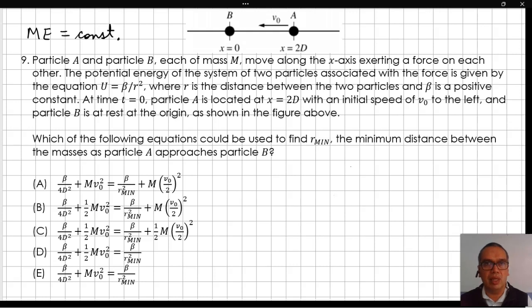Also, given that this force is the negative of the derivative of the potential energy relative to position, that is equal to positive 2 beta over r cubed. The positive value indicates the force is pushing the two particles apart.